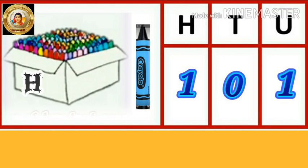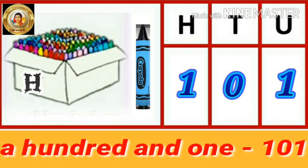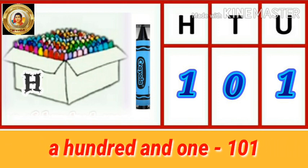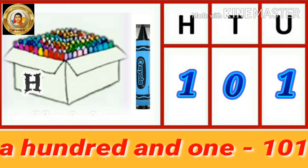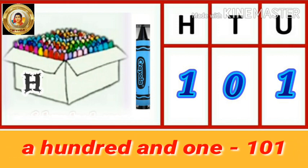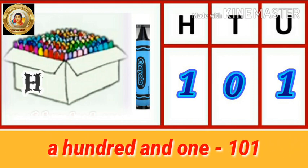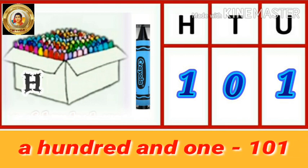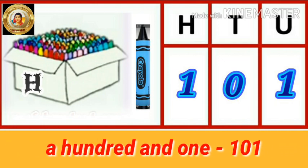And 1 single crayon. So it makes a 3-digit number: a hundred and one. How do we read this number? A hundred and one. That is one zero one.